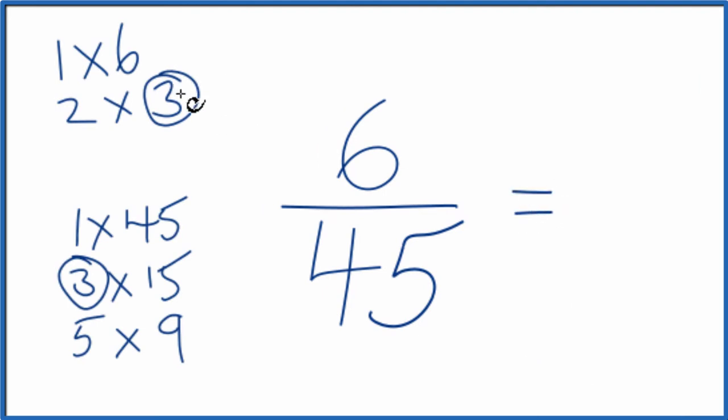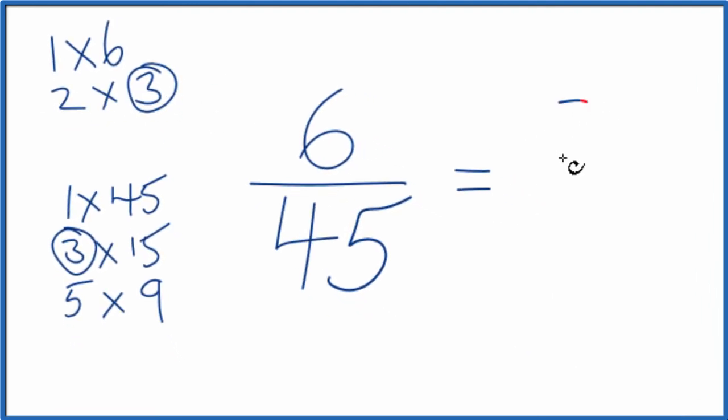So we divide 6 by 3, that gives us 2. And then 45, we divide that by 3, and that gives us 15. And we end up with 2/15.